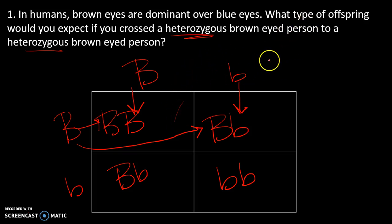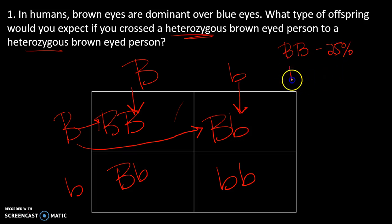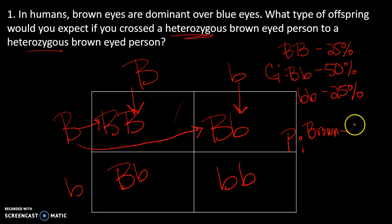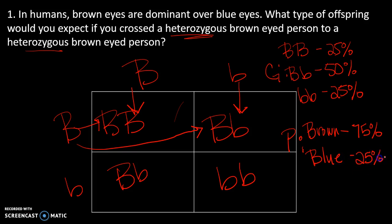What type of offspring would you expect? We want to write our genotypic and phenotypic ratios. Genotypically, we'd have a 25% chance of homozygous dominant, a 50% chance of heterozygous, and a 25% chance of homozygous recessive. Phenotypically, brown eyes we'd expect to see 75% of the time, because three genotypes all show that trait, and blue eyes we'd expect to see 25% of the time.